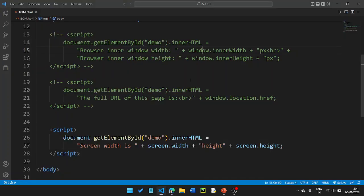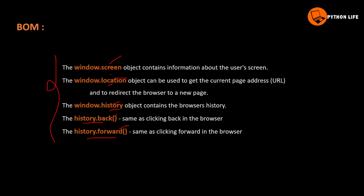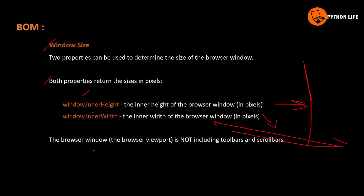So these are the window properties. In the Browser Object Model, there are several properties including window, history, screen, and others.